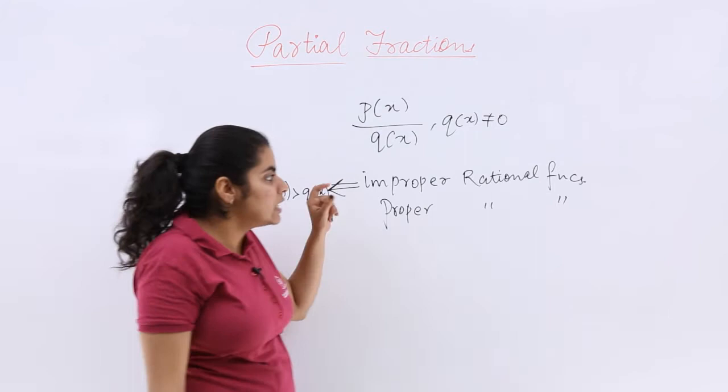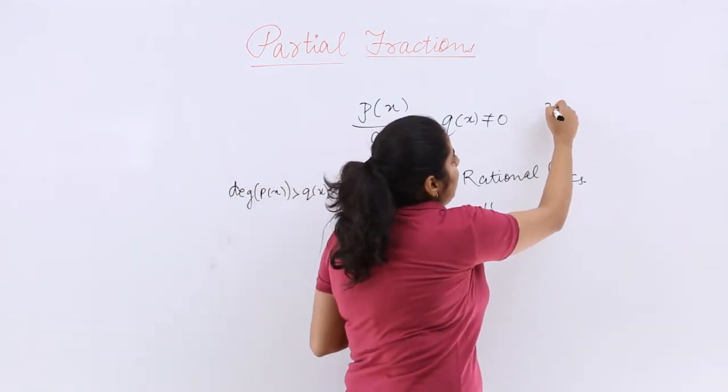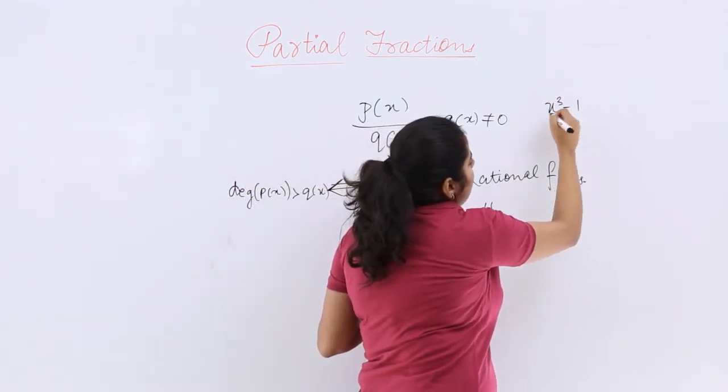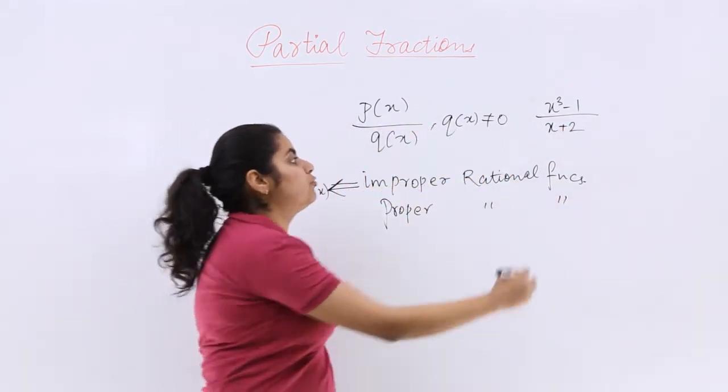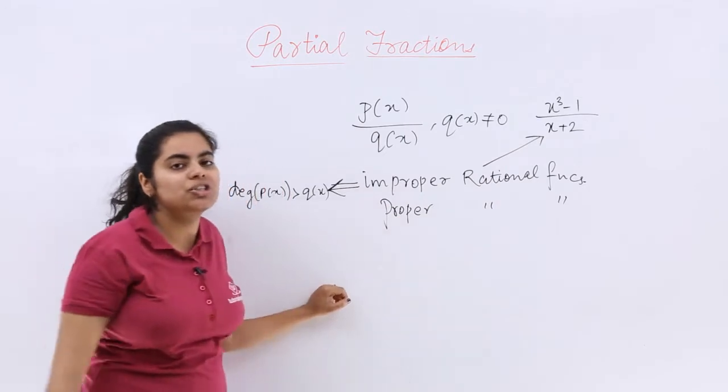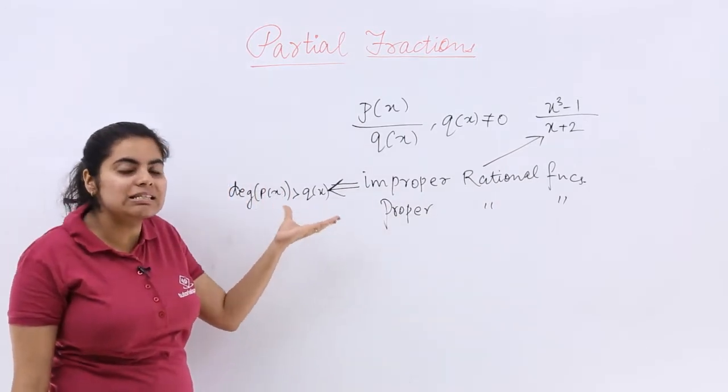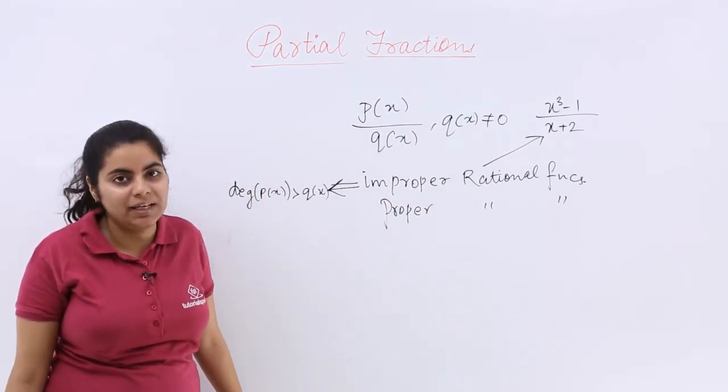That means the example of improper could be what? x cube minus 1 upon x plus 2. So that is the category of improper rational function where the degree of the numerator is greater than that of the denominator.